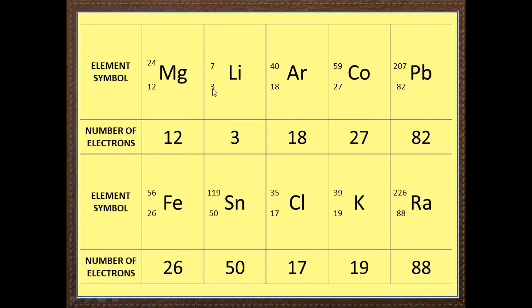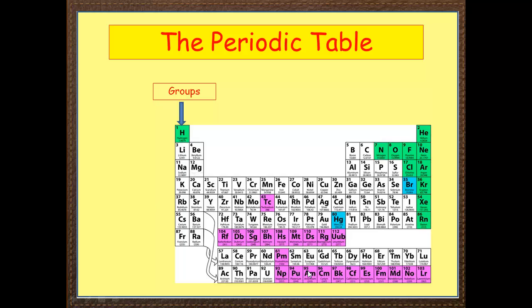Okay, let's check our answer, shall we? So, lithium, 3, argon, 18, cobalt, 27, lead, 82, iron, 26, tin, 50, chlorine, 17, potassium, 19, and radium, 88. Now, that wasn't so difficult, was it?